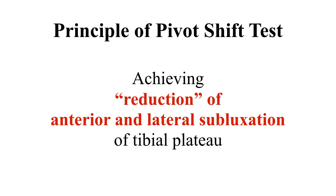These two mechanisms should be kept in mind to understand the pivot shift test. The principle of the pivot shift test is to achieve reduction of the anterior and lateral subluxation of the tibial plateau that occurs following anterior cruciate ligament rupture, so that it is repositioned again into the knee joint.